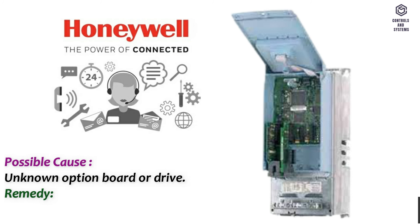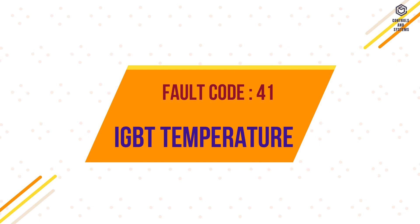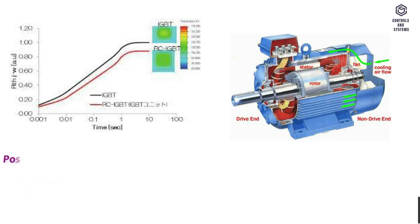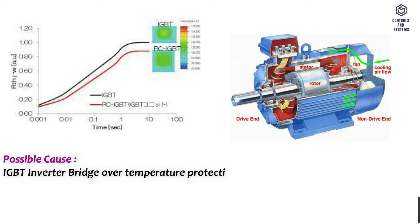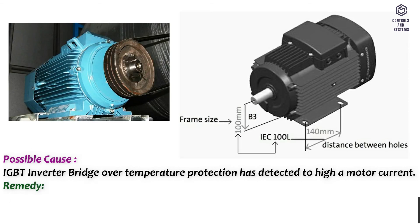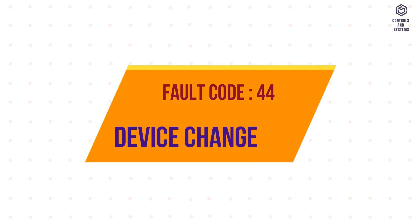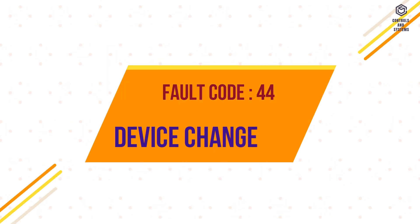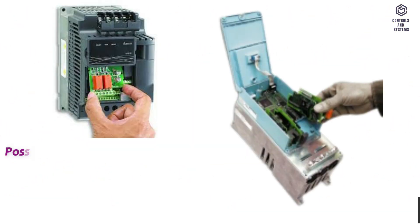Fault code 40 remedy: contact technical support. Fault code 41 – IGBT temperature. Possible cause: IGBT inverter bridge over-temperature protection has detected too high a motor current. Remedy: check loading, check motor size.